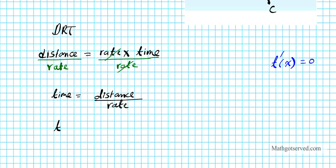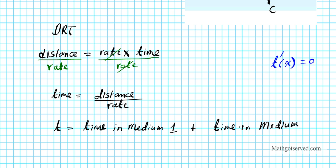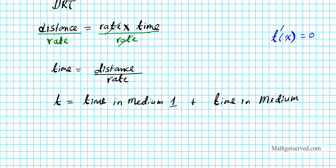The total time T equals the time in medium 1 plus the time in medium 2. Since light travels at different velocities and over different distances in each medium, the times are different. We abbreviate this as T = T_M1 + T_M2, and we'll find explicit equations for each using the DIRT formula and the triangles we just created.